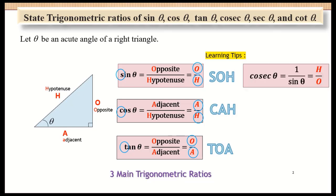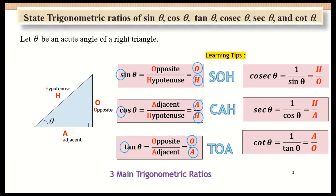We know that cosecant theta is equivalent to 1 over sine theta, which is equivalent to H over O. We also note that tangent theta is equal to sine theta over cosine theta, which is equal to O over A.